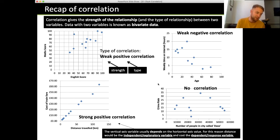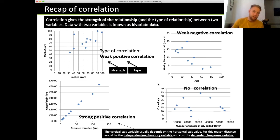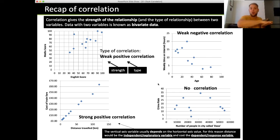The vertical axis variable usually depends on the horizontal axis value. For this reason, the distance would be the independent or explanatory variable, and the train fare would be the dependent or response variable. The thing that can actually change is the independent variable at the bottom. You don't say 'I want to spend this much — where am I going?' You say 'I'm going to this place,' and the cost of the train travel depends on how far you're actually travelling.